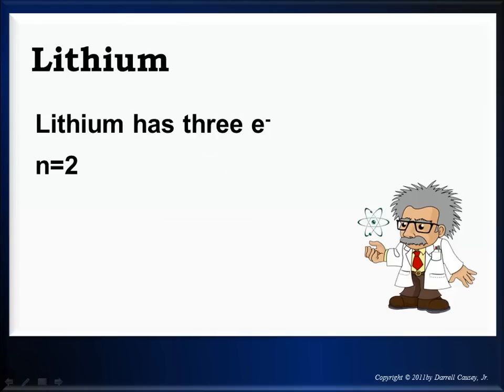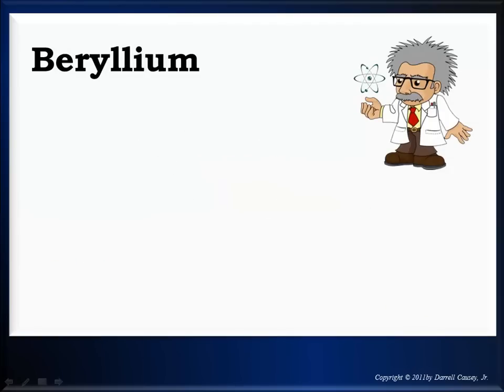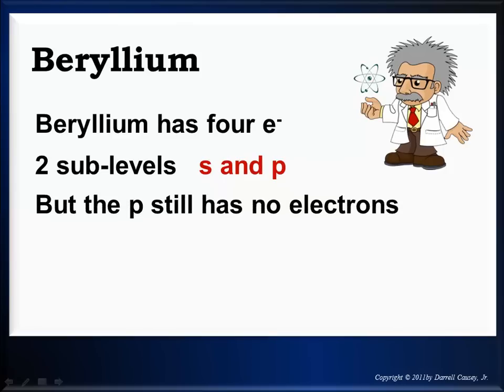Lithium has 3 electrons. So now we've got to jump into the second energy level, because the first energy level can only have s. There can be no p. But in the second energy level, we can have 2 sub-levels, which would be s and p. And you'll see it's 1s2, 2s1. Look at beryllium. Same kind of thing as with lithium. s and p. But the p still has no electrons. And there is the beryllium configuration.